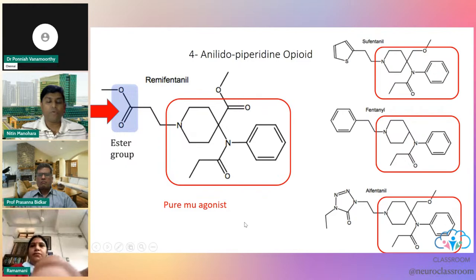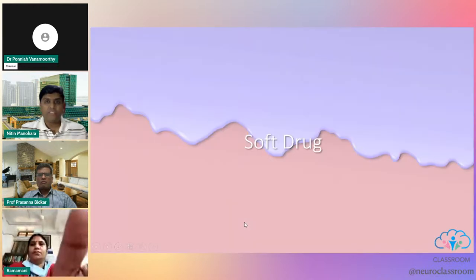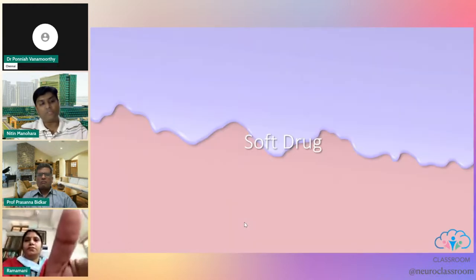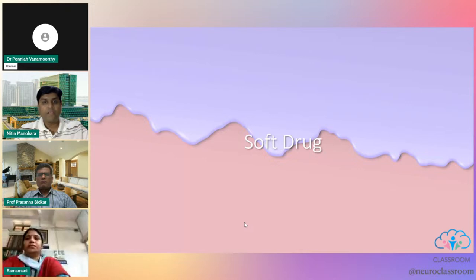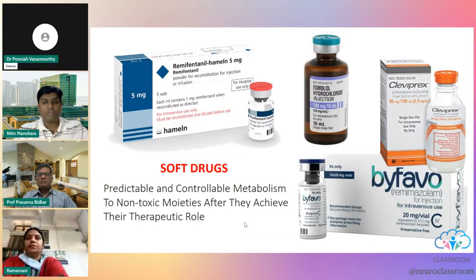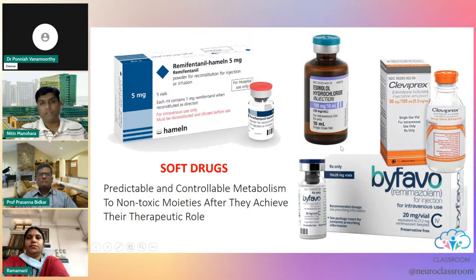Remifentanil is a pure mu agonist and belongs to a group called soft drugs. Soft drugs have a predictable and controlled metabolism — they are metabolized to non-toxic moieties after achieving their therapeutic role, just like other soft drugs such as esmolol, clevidipine, and remimazolam, which is also coming in the future.